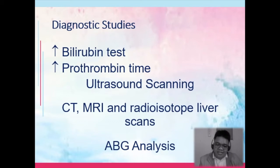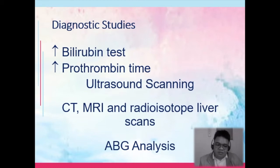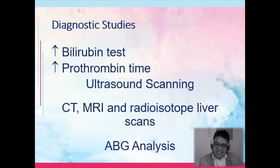For ABG analysis, the most common acid-base imbalance among patients with liver cirrhosis is metabolic acidosis — metabolic because the liver is in charge of metabolism, so metabolic byproducts become imbalanced. Acidosis occurs due to failure of bicarbonate production, which normally balances the acid, and failure to excrete the acid. Metabolic acidosis is common for these patients.